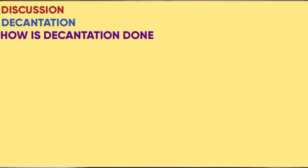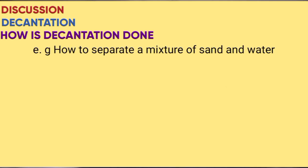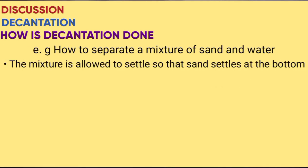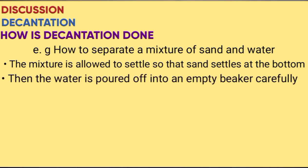How is decantation done? For example, how to separate sand and water. The mixture is allowed to settle so that sand settles at the bottom. Then the water is poured off into an empty beaker carefully.